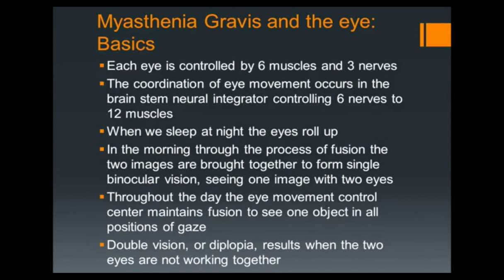At night when we sleep, our eyes roll up and out. When we wake up in the morning, through a process called fusion, you develop single binocular vision. The job of the computer is to keep your eyes straight all day long no matter where you're looking — moving six nerves to 12 muscles precisely within a millimeter of each other at an instant. What we're seeing in myasthenia is end-muscle disease, where the muscle and the nerve are interacting in the orbit, not in the brainstem, producing the double vision.